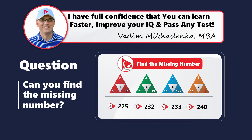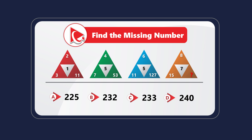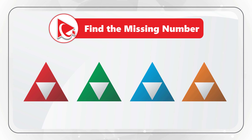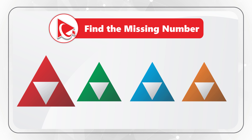Here is the famous four-square triangle question that you frequently see on the test. You're presented with four triangles. In each triangle there is a smaller triangle which breaks it down into four parts, and each part has a number. In one small triangle the number is missing. The first triangle has numbers 3, 2, 11, and number 1 in the middle.